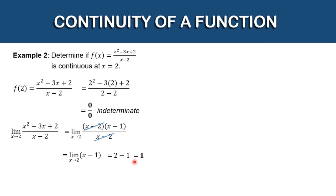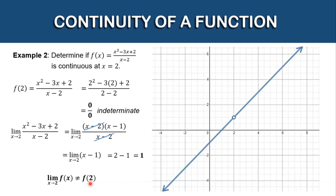Even though the function is undefined at x equals 2, its limit still exists. For the third condition, the limit as x approaches 2 is not equal to the value of the function, since f of 2 is undefined. Therefore, the function is discontinuous at x is equal to 2. Looking at the graph, there is a hole because the function is undefined at x equals 2, but the limit still exists at 1.